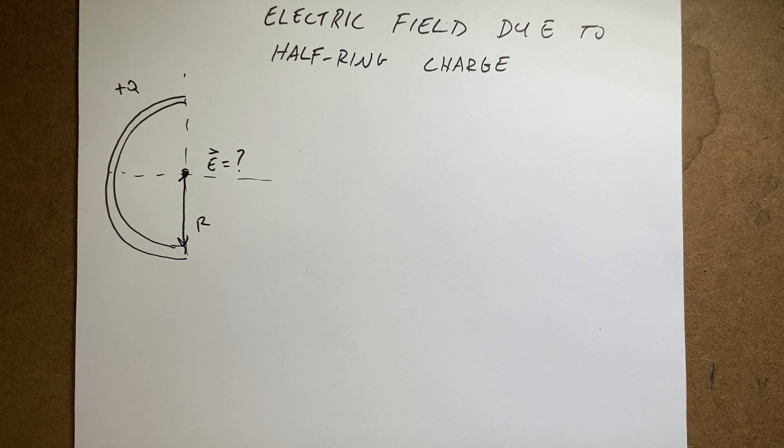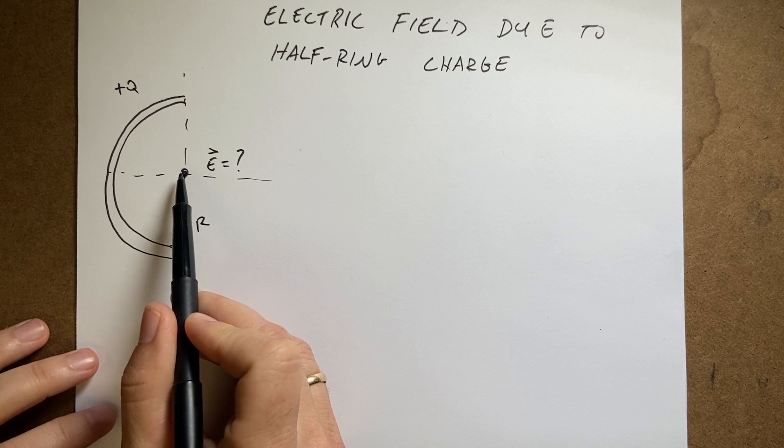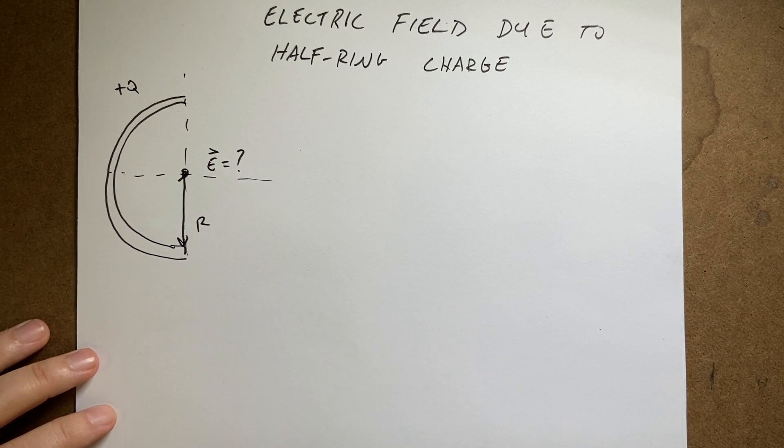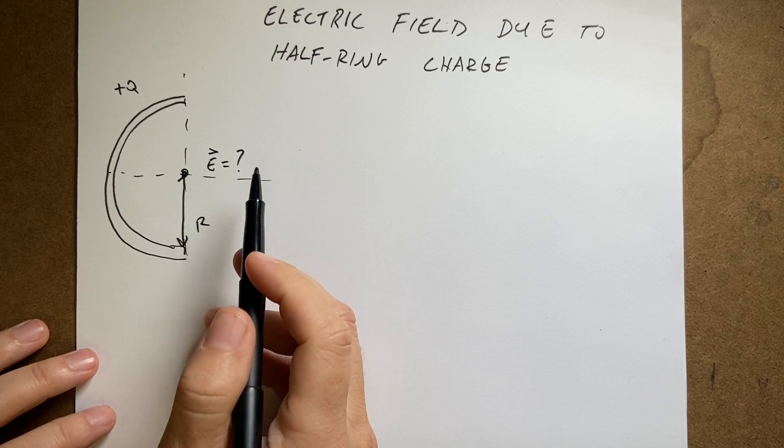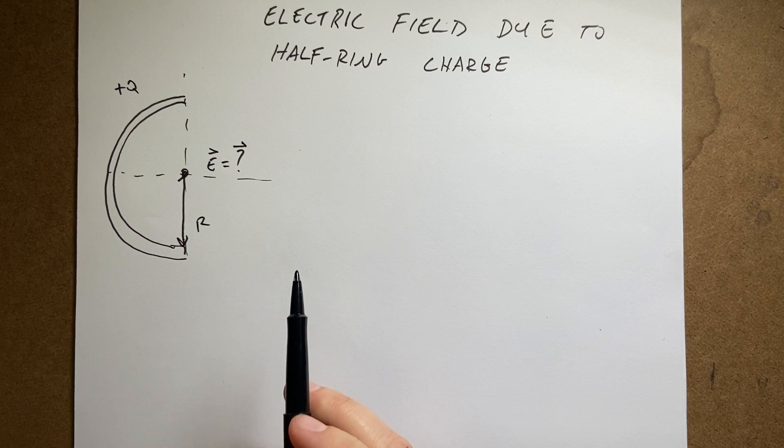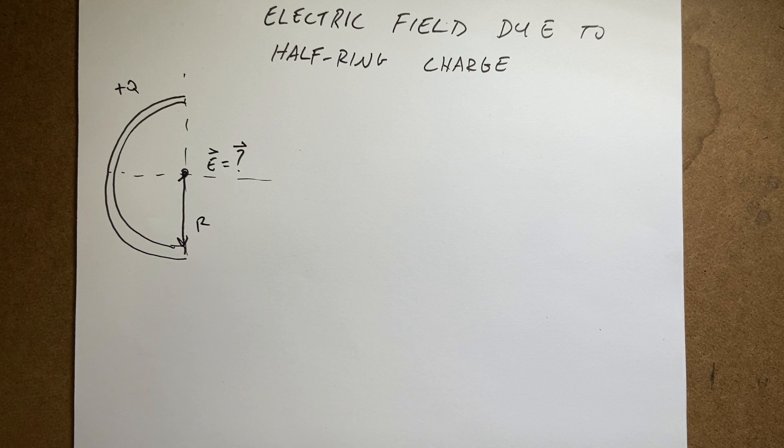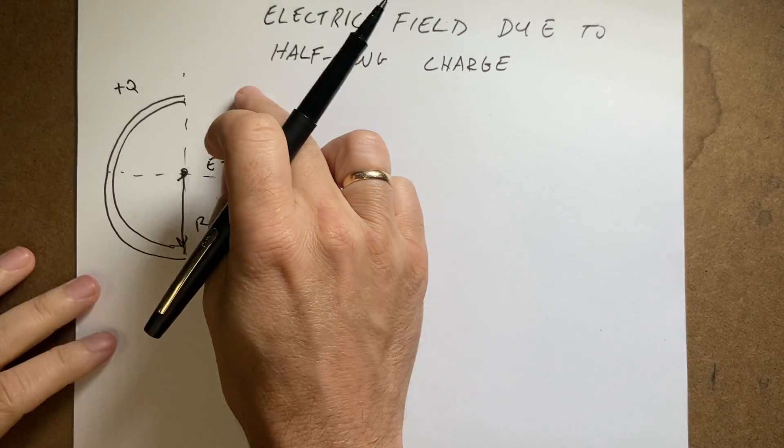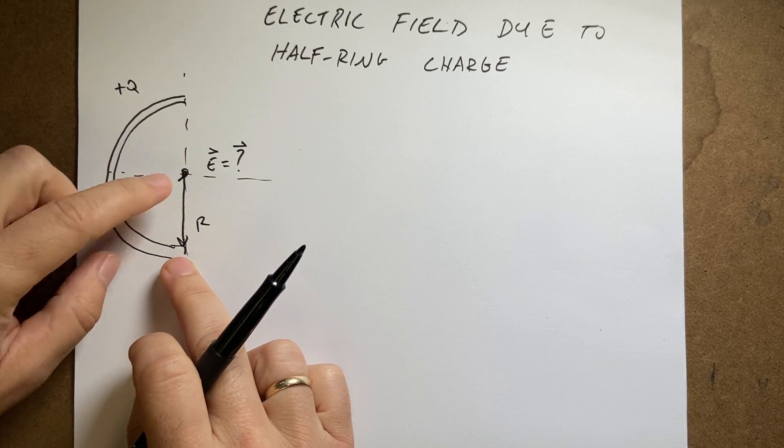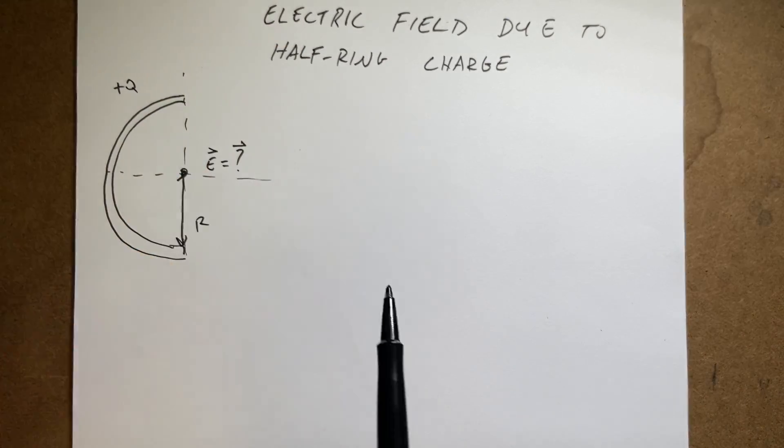So let's find the electric field due to this half ring. And I'm going to do it at this point right here in the center of the half ring. So electric field equals question mark vector, right? Because you have to have vectors on both sides. The problem here is if you say I'm going to find the electric field due to a ring equation and then cut that in half, that doesn't work. If you had the full ring, the electric field would be zero right there in the center, because all the electric fields due to all the pieces add up and cancel.